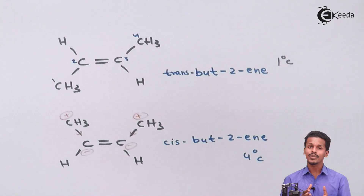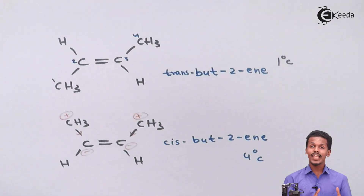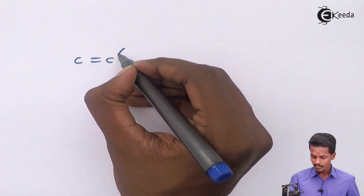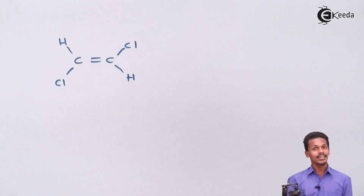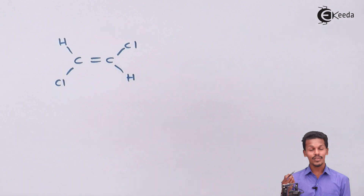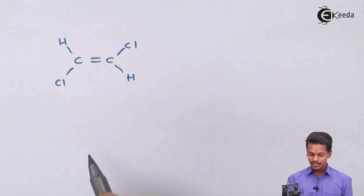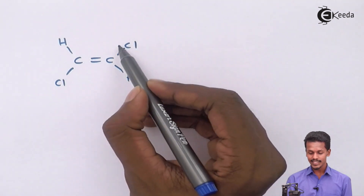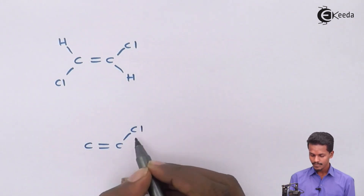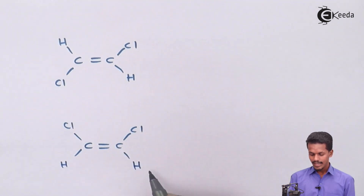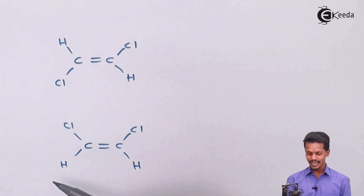Now let me give another example — instead of a pure hydrocarbon alkene, consider a derivative where one or two hydrogen atoms are replaced by halogen groups. Suppose we have a molecule with two chlorine substituents. This is the trans isomer because the two Cl groups are on opposite sides. The cis isomer has both Cl atoms on the same side and both hydrogen atoms on the same side.